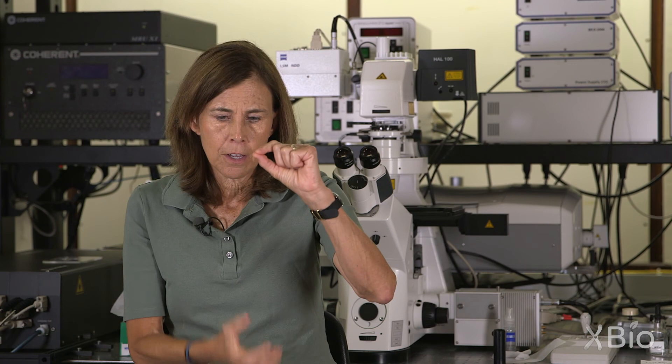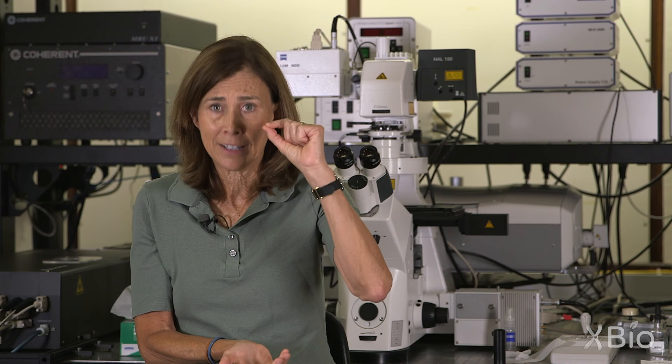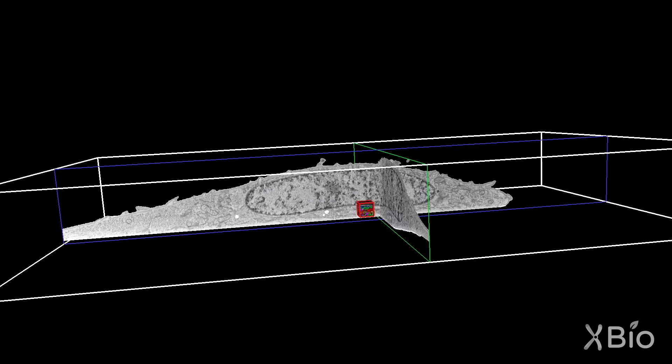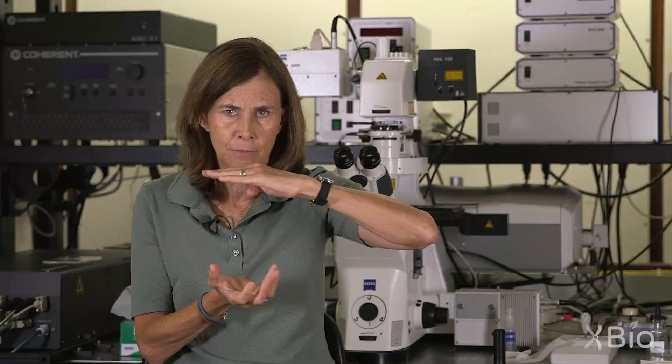At four nanometer slices, if you slice through a whole cell that's 40 microns, that's a lot of slices. So there are significant challenges to putting all the information together. Each slice requires you to analyze what you're seeing, and then you have to stitch together all of the structures you've outlined in each slice into one huge volume.